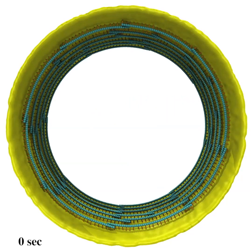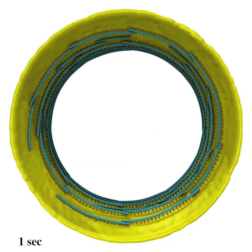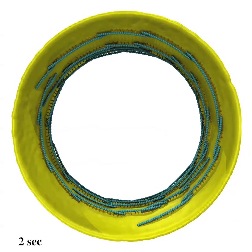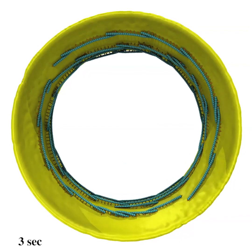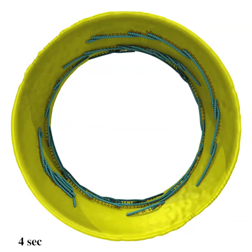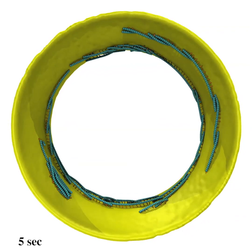Our simulation shows that to preserve ring integrity, the rate of depolymerization must be regulated because the sliding rate is limited by the rate of cell wall growth. If depolymerization is too fast, the rings break up.